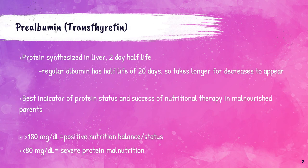Prealbumin, also called transthyretin, is a protein that is produced in the liver, is responsible for helping to transport thyroid hormones and vitamin A throughout the bloodstream, and also helps regulate how the body uses energy. Prealbumin has a two-day half-life — half-life being the time it takes for the amount of a substance to decay by half in the body. Regular albumin has a half-life of 20 days.